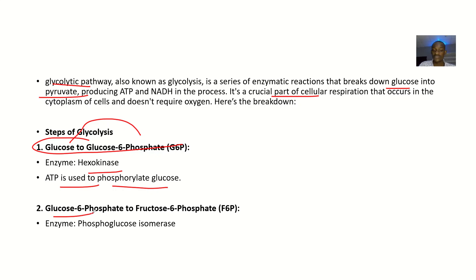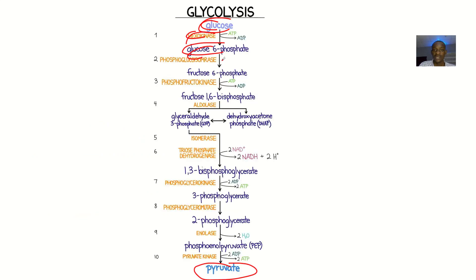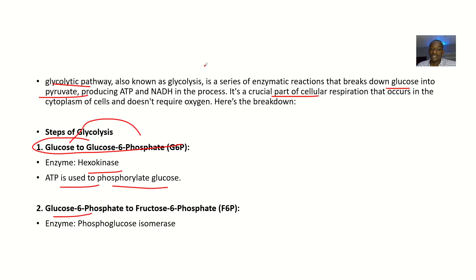For the second step, glucose-6-phosphate is converted to fructose-6-phosphate. The enzyme there is phosphoglucoisomerase. When they say isomerase, you are rearranging the structure of glucose to become fructose.